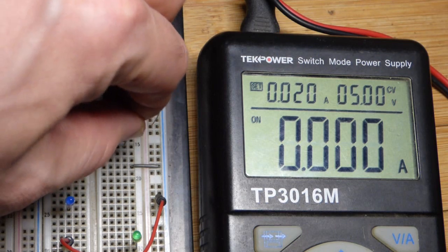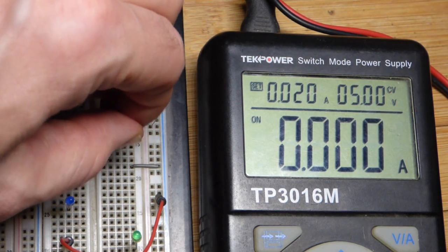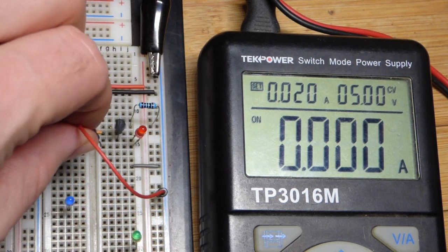So we have 5 volts there. This is a red LED. Make sure I put it in the right way. So long lead, the anode, needs to go towards a positive supply. Short lead, the cathode, needs to go to the negative supply.